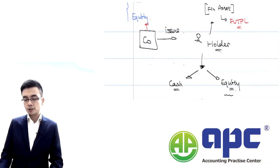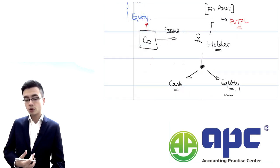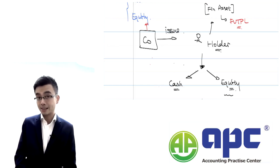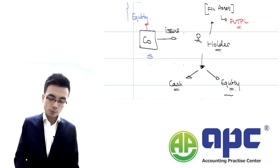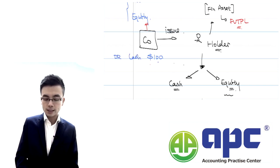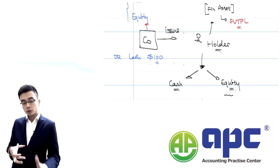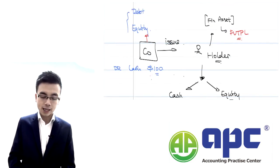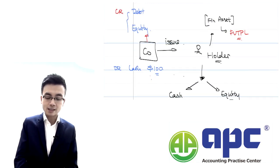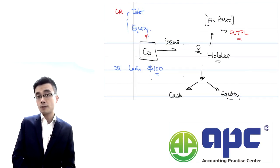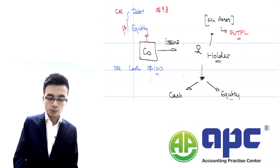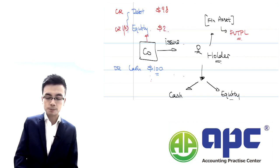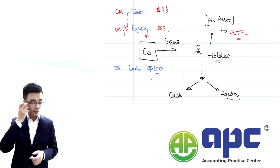The simple idea is: if we issue one convertible bond — or compound financial instrument — with a nominal value of $100, the company debits cash worth $100 at the start. But we need to split that $100 into debt and equity elements. After calculating the debt element by discounting all future interest payments and the redemption value — let's say $98 — we put the balancing figure to equity, worth $2.